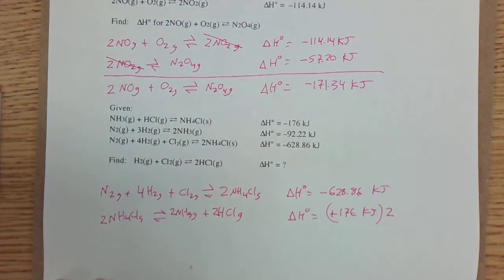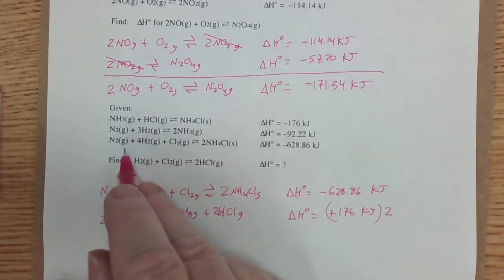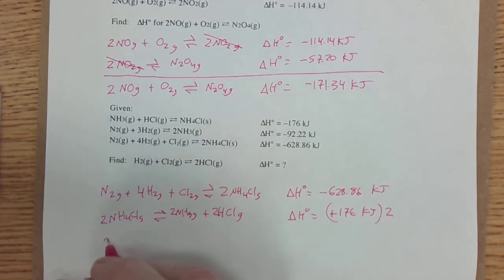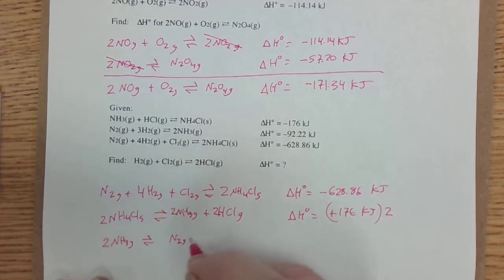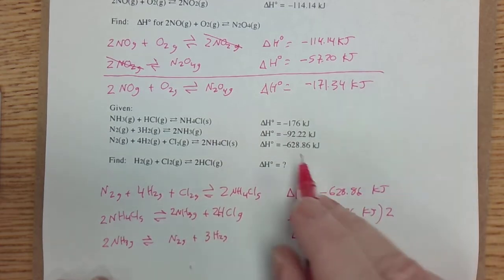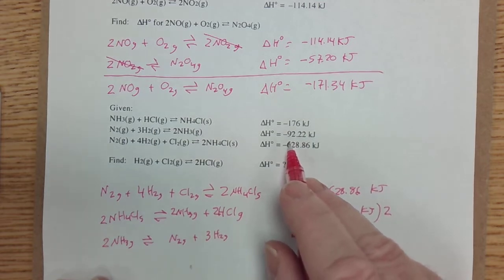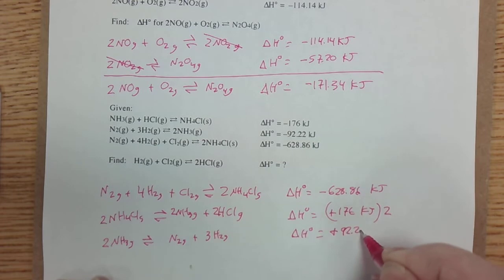Now, what's that middle equation for? It's to make this other stuff cancel. I need to cancel two NH3s. So I'll reverse this one to NH3 gas, and that's going to give me N2 gas plus 3 H2 gas and the delta H naught that's going to equal, instead of the negative 92.22, it's a positive 92.22 kilojoules.